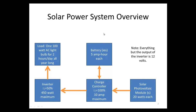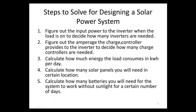So how do we choose how many of these components we need? We go through all the steps to design a solar power system. Step one: figure out how many inverters we need. Step two: figure out how many charge controllers are needed. Step three: calculate how much the load uses per day. Steps four and five: calculate how many solar panels and batteries we'll need.